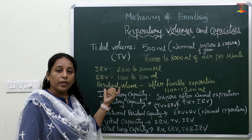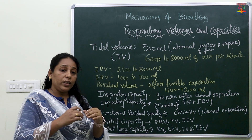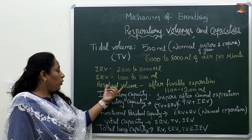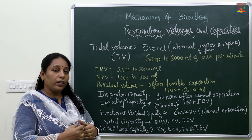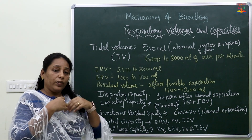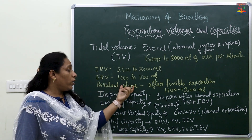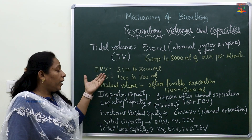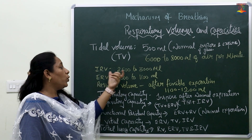Next is ERV — Expiratory Reserve Volume — the additional amount of air which we exhale, around 1,000 to 1,100 ml. Next is Residual Volume — the amount of air remaining after forcible expiration, which is exhaled from the body. The capacity of residual volume is 1,100 to 1,200 ml.